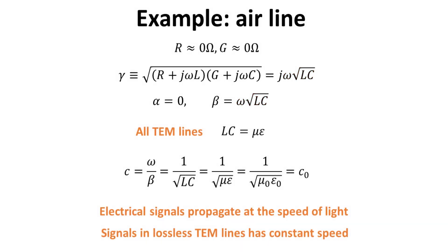Using the property of a TEM line, the velocity of the wave, which is given by the ratio between omega and beta, will be a constant defined only by the permeability and permittivity of the space. In free space, the speed reduces to the free space speed of light, 3 times 10 to the power of 8 meters per second. We have thus shown that signals in lossless TEM lines travel at a constant speed independent of frequency, or what we call a dispersionless line.